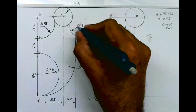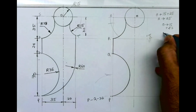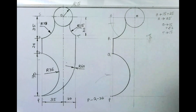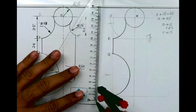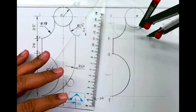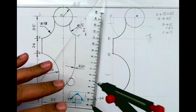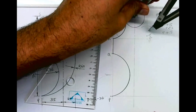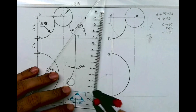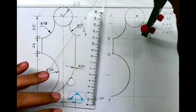From O we cut 15 plus 15, and from T we cut 15. See — from T cut 15 and from O cut 30. So from O 30 and from T 15, you can draw this radius 15.